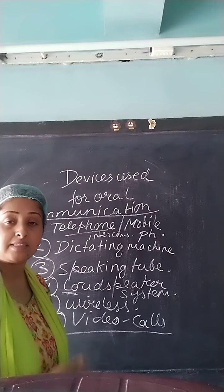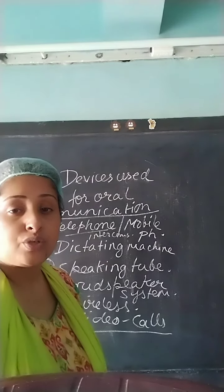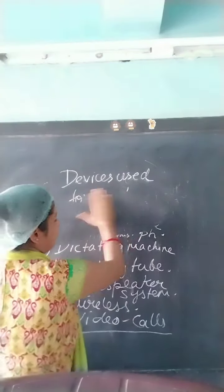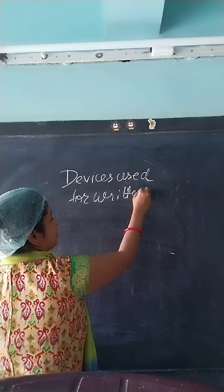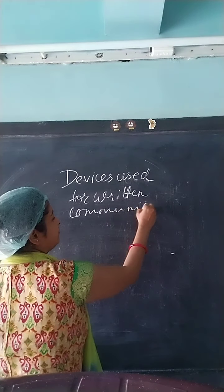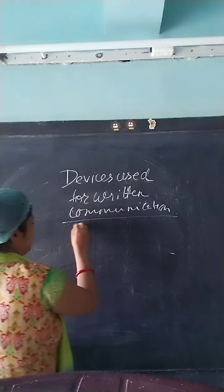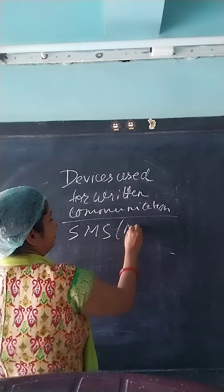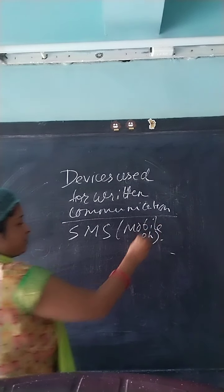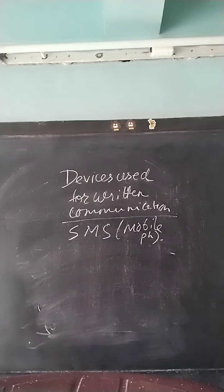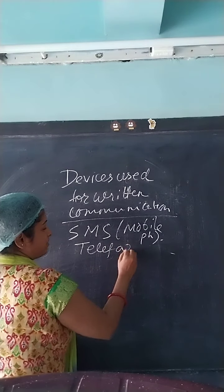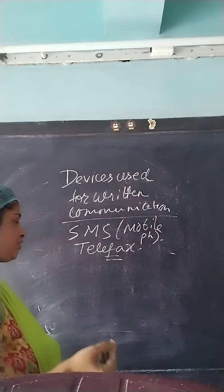Now we will discuss about the devices used for written communication. SMS on the mobile phone can be used for written communication. Apart from this, a teleprinter or fax — you can call it telefax — is also a writing device. Fax machines are used to send written messages from one place to another. So telefax is another device for written communication.